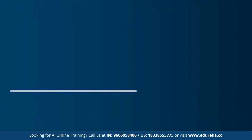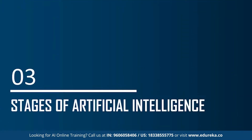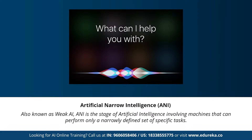Now let's understand the different stages of artificial intelligence. Many videos and articles state that artificial general intelligence, artificial narrow intelligence, and artificial super intelligence are the different types of AI — but to be precise, these are actually the three different stages of AI. The types of AI are completely different from the stages of AI. Under the stages, we have artificial narrow intelligence, artificial general intelligence, and artificial super intelligence.